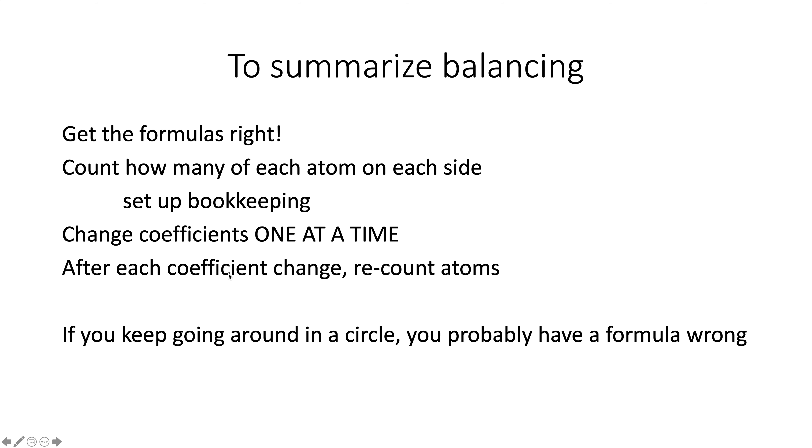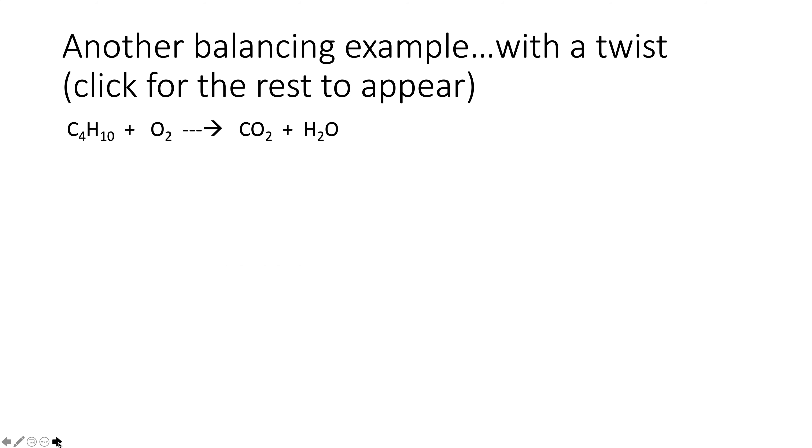This is the summary: through each coefficient, recount. If you're going around in a circle and you feel like you just cannot get it to balance, you probably have a formula wrong.